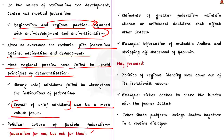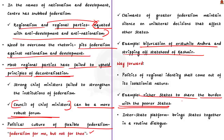It means the claimants of greater federalism often maintain silence on unilateral decisions taken by the central government that affect other states. The evidence is the bifurcation of erstwhile Andhra Pradesh, which was done against the resolution of the state legislature. And even at present, the Kashmir bifurcation is another example. When a state's rights are undermined by the center through policies such as the National Capital Territory of Delhi Amendment Act 2021, we hardly witnessed protests by parties that were not directly affected. The way forward is that politics of regional identity shall come out of its isolationist nature. The richer states must find a way of sharing the burden with the poorer states, and an interstate platform that brings states together in routine dialogue could be the starting point for building a common agenda.